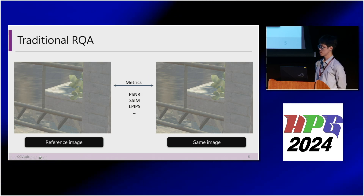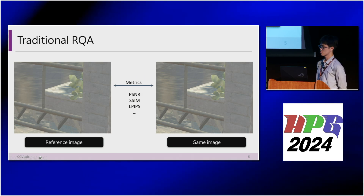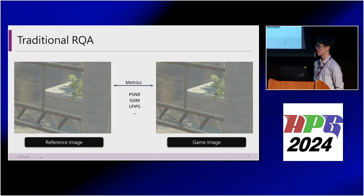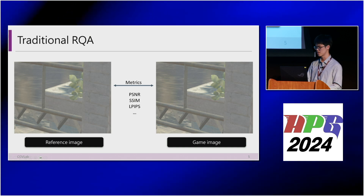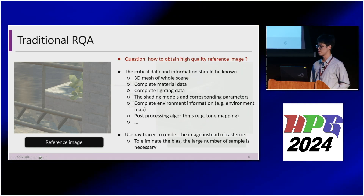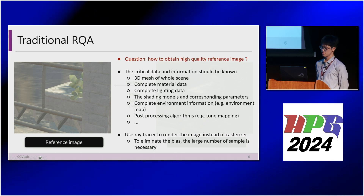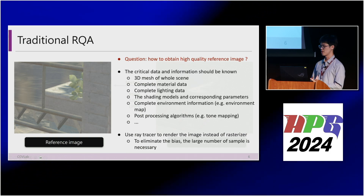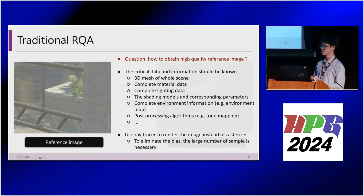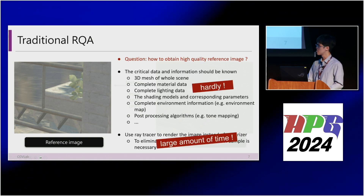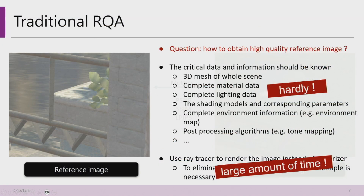Given a rendered image, traditional RQA methods require a reference image to compute metrics like PSNR or SSIM for quality assessment. But the problem is how to obtain the reference image. To obtain it, we need critical data like 3D mesh, material, and lighting, or simulate through a high SPP ray tracer. However, acquiring 3D information is challenging, and using a high SPP ray tracer is impractical due to its time consumption.